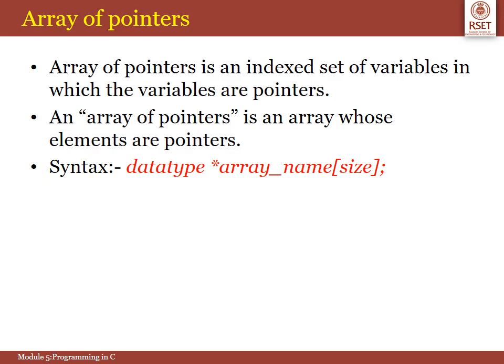As you all know, Array is actually a set of variables holding same type of values and Pointers are variables which will point to a location in memory. That means Pointer variables hold the address instead of data. So, Array of Pointers is an indexed set of variables in which the variables are Pointers. It allows you to numerically index a large set of variables. So, an Array of Pointers is an Array whose elements are Pointers.